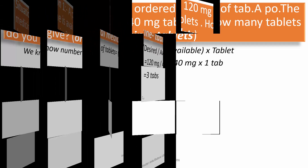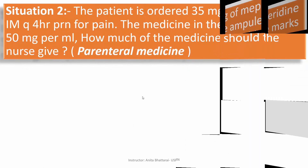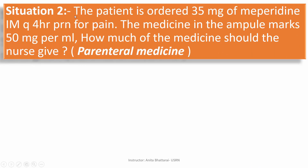Let's go to the next situation. In situation 2, a patient is ordered 35 mg of meperidine IM Q4hr PRN for pain. The medicine in the ampoule is marked 50 mg per ml. How much medicine should the nurse give? This is a parenteral medication question.